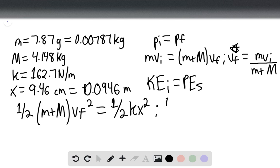...times [m v_initial divided by (m + M)] squared equals 1/2 k x squared.